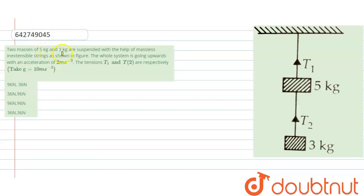masses of 5 kg and 3 kg are suspended with the help of massless inextensible strings as shown in figure. The whole system is going upwards with an acceleration of 2 meter per second squared. The tensions T1 and T2 are respectively